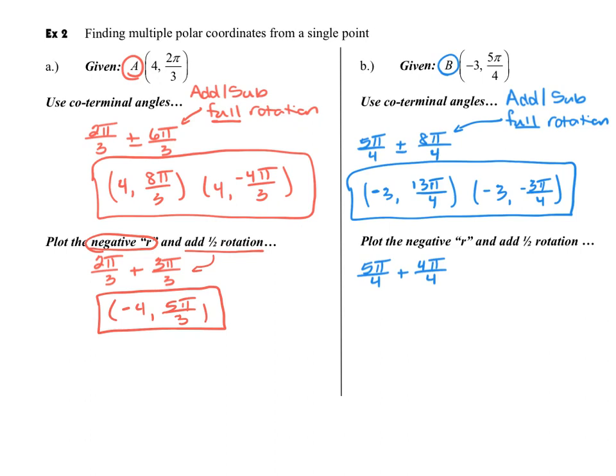We can do the same thing with our point B. We're going to do a negative R. And in this case, the R value was negative to start with. So I'm going to flip it to a positive. And then I'm only going to add half the rotation to the five pi over four. And then I'll get nine pi over four.